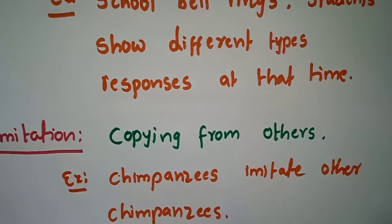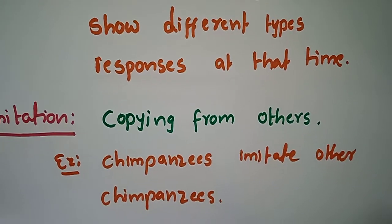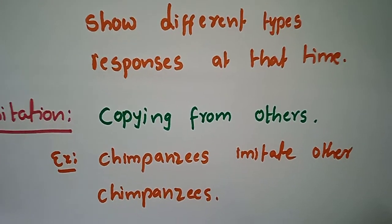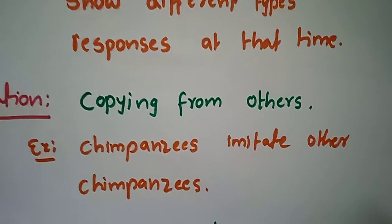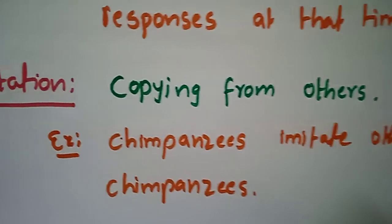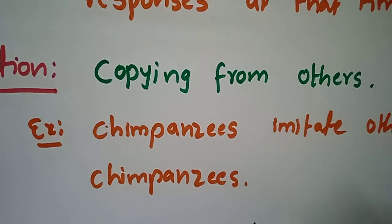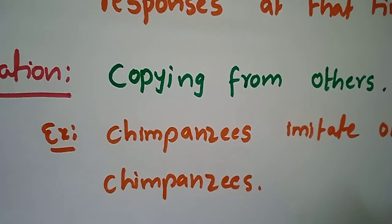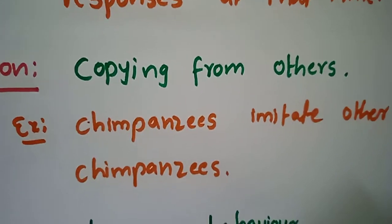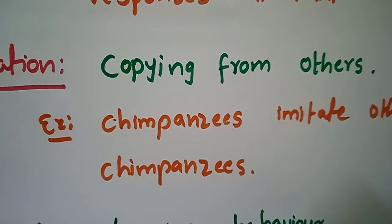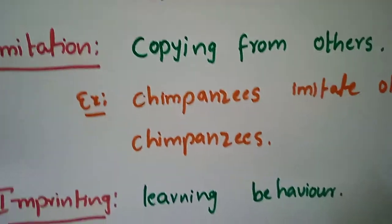Imitation. What is imitate? Copying — copying from others. Example: chimpanzees imitate other chimpanzees.